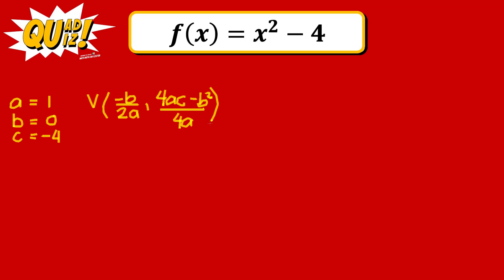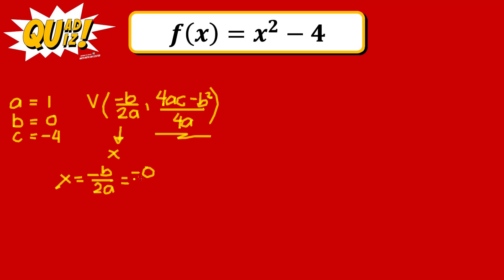These formulas use the coefficients to tell us the value of our vertex. Once you get the x value, simply substitute it into the original function to find y. For the x-coordinate, we have negative b over 2a. Since b is 0, we get negative 0 over 2 times 1, which gives us x equals 0. This is the x-coordinate of the vertex.